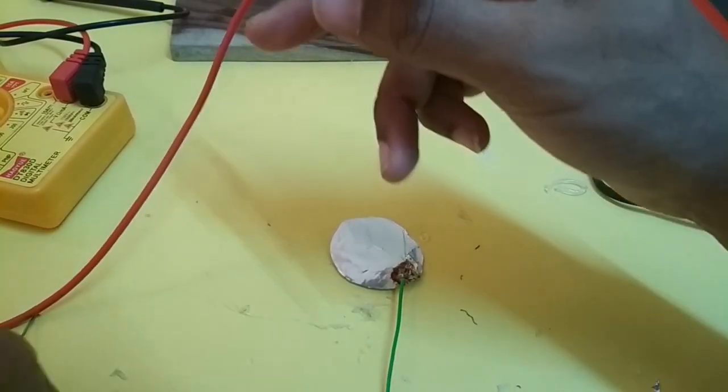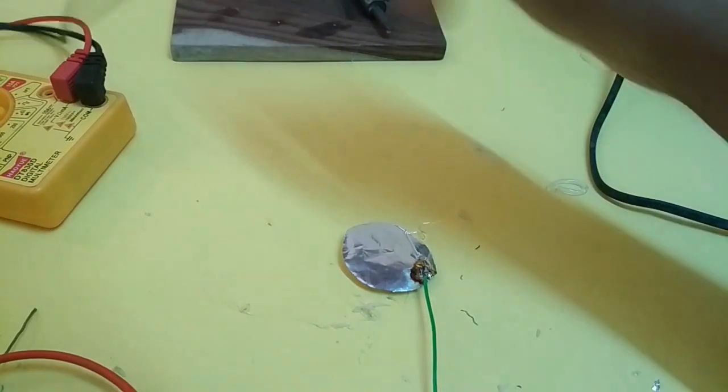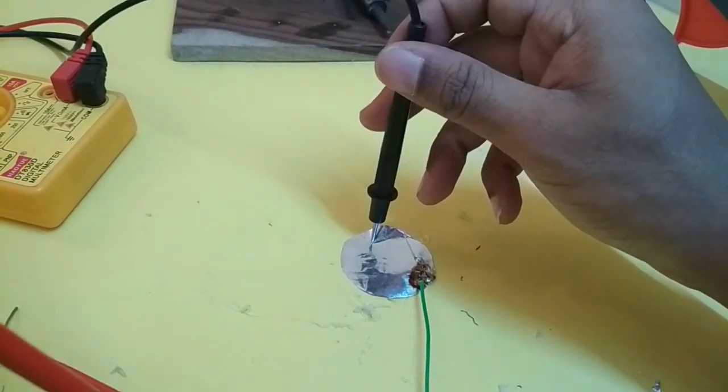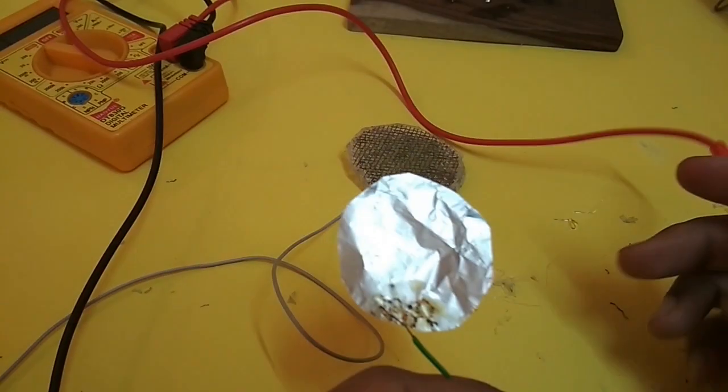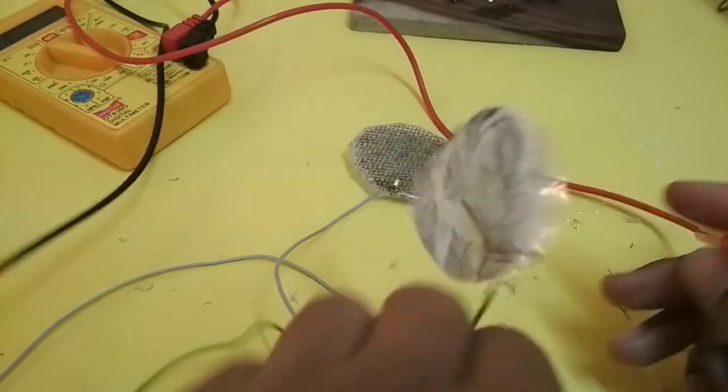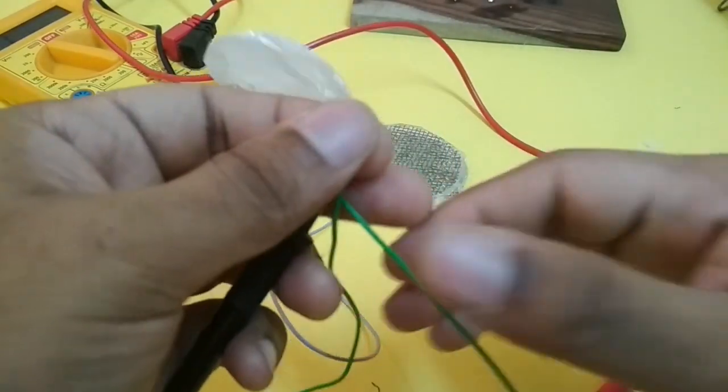You want to make sure that we have contact. Okay, so I had more luck soldering to the less shiny side of the foil. We have a connection now.